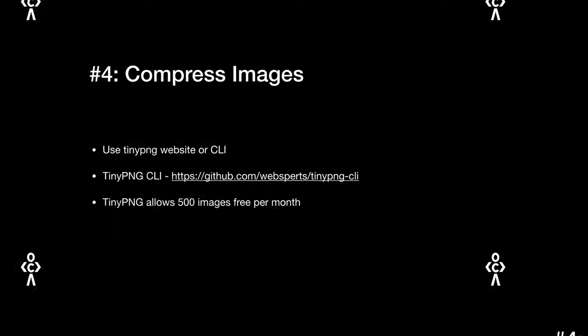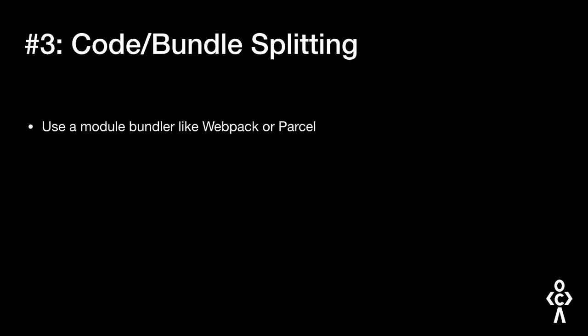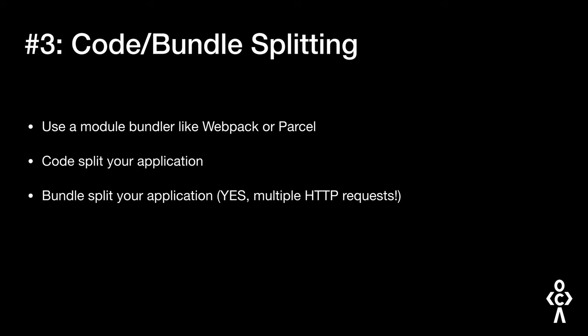Moving on to number three: code and bundle splitting. I cannot emphasize enough how important this is. You need to use a module bundler like Webpack or Parcel. Code splitting means lazily loading only the code required at that particular moment. For example, in a React application with many pages — homepage, about page, contact, login, dashboard — you don't want all of that to load at once. You might want to prefetch it once the initial render is done, but only prefetch it. Loading all pages at once when they're not required is what code splitting avoids. Bundle splitting, on the other hand, means splitting a single file into multiple smaller files.